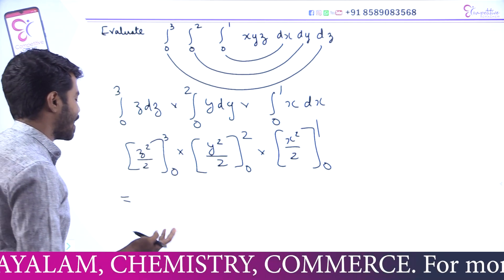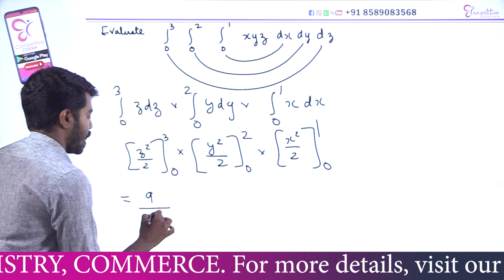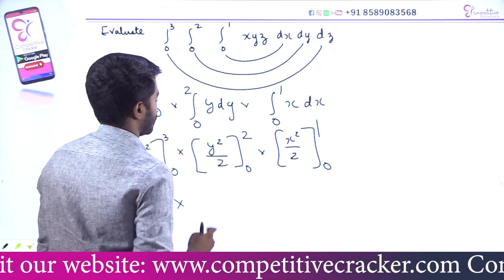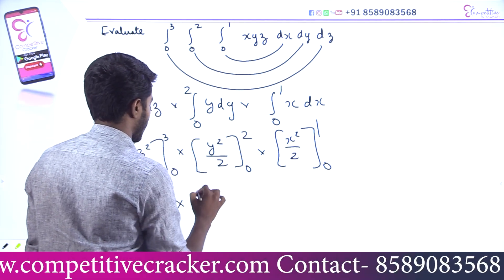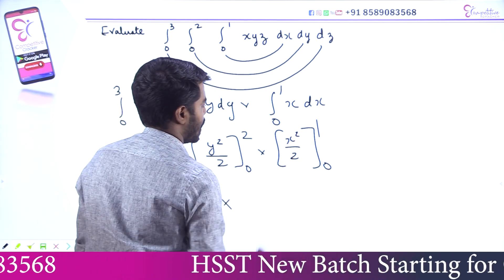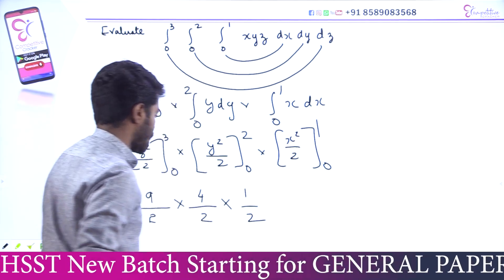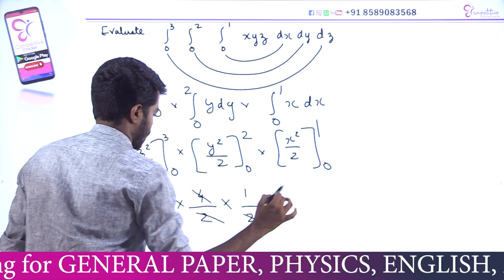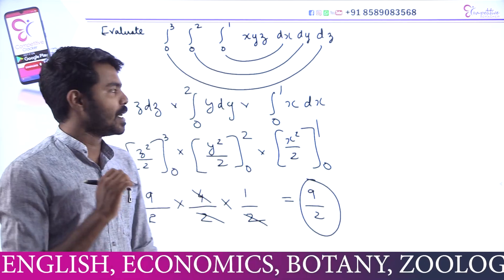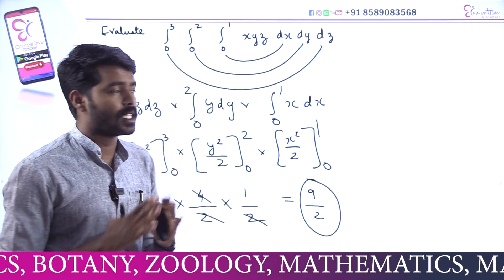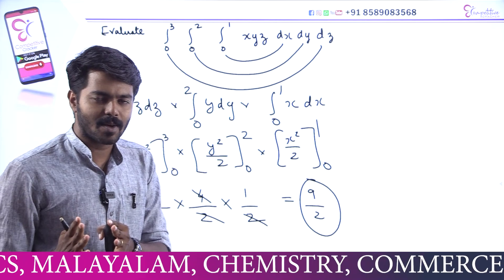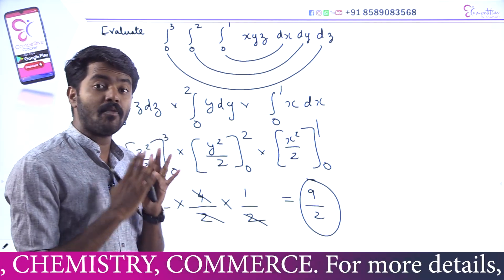That equals: z² evaluated — upper limit 3 squared = 9 by 2. Lower limit is zero, so we can avoid it. Then y² by 2, upper limit 4 by 2. Lower limit is 0. Then x² by 2, upper limit 1 by 2. We cancel and get 9 by 2. That is the answer — 9 by 2.